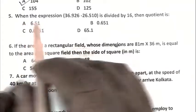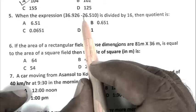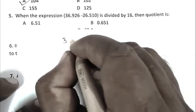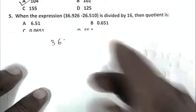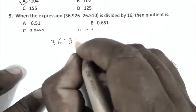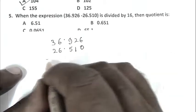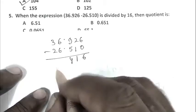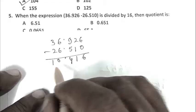Question number 5: When the expression 36.926 minus 26.510 is divided by 16. We can write 36.926 minus 26.510. Subtracting we get 10.416.